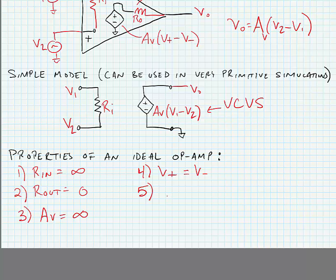Finally, we'd like the input impedance to be infinite, which means that the current going into the terminals of the device is equal to zero. We're going to look at using negative feedback in the next set of slides. See you soon.